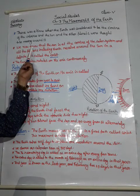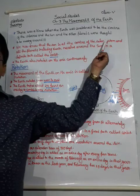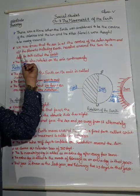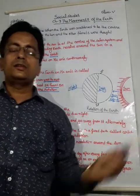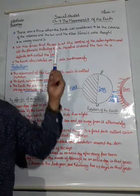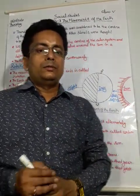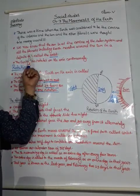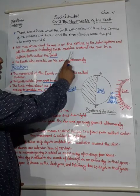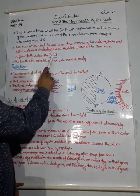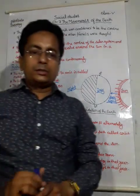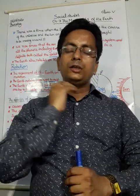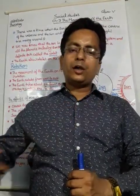Now we know that the Sun is at the center of the solar system. All planets, including the earth, revolve around the Sun in a definite path called an orbit. The center body is the Sun, and all the planets including earth move around it in a particular orbit.